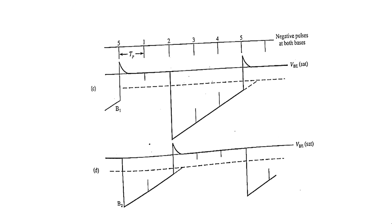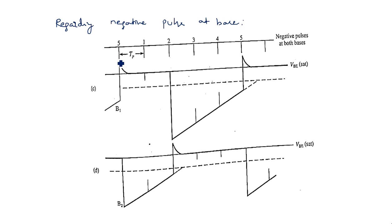Regarding negative pulses at the bases: the negative pulse should be applied to the transistor which is in on state. The negative peak applied here is sufficient to make the transistor turn off. The capacitor has to charge up to a certain value, but whenever the negative pulse is added, it automatically brings the transistor into off state. The same concept applies — we are changing the transistor state using negative pulses applied to the base of the transistor that is currently on.